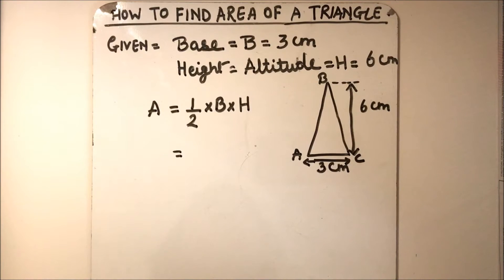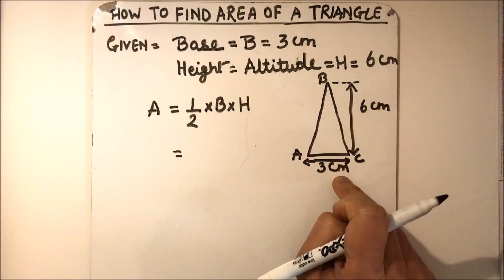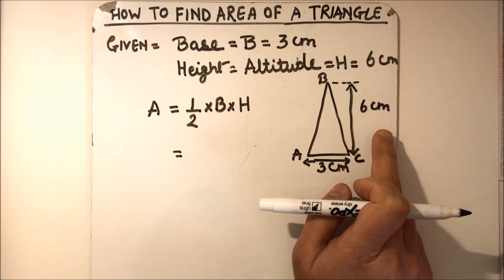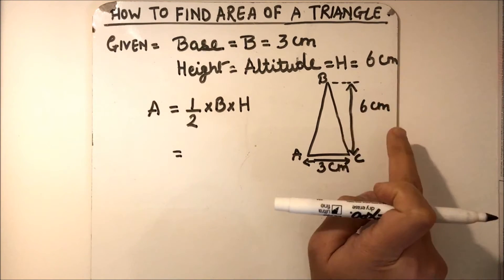Hello viewers, today we will learn how to find the area of a triangle. Suppose we have a triangle ABC whose base is 3 centimeters and height is 6 centimeters. Height is also called altitude of a triangle.